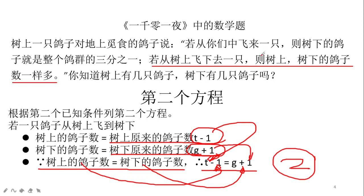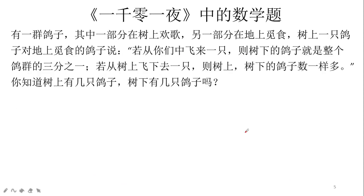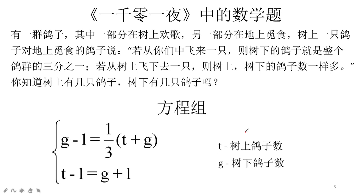这样我们就根据题目里这两个未知数，得出了两个方程。题目有两个问题，有两个已知条件，所以用两个未知数来代替这两个问题。根据两个已知条件列出两个方程，两个方程正好能够解出这两个未知数，可以得到确定解。